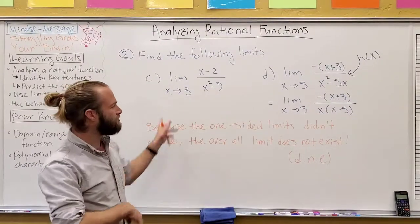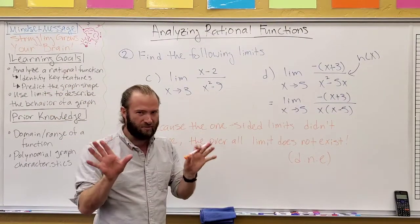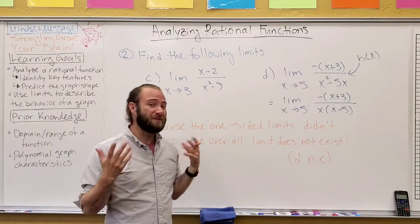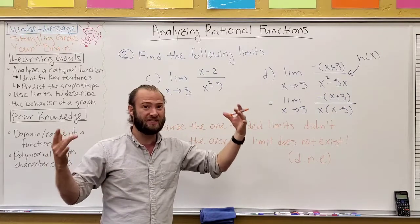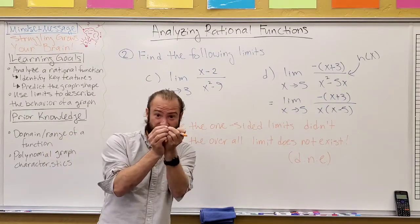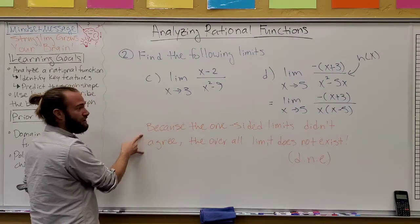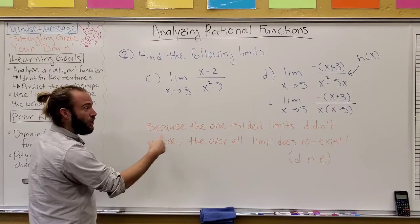So, I kind of misled you with the two answers before. Don't get me wrong. We did everything correct. It is important to think about the one-sided limits. But, because those one-sided limits went to infinity, and they didn't actually agree together, they weren't the same thing as each other, then actually it turns out, for these two situations, the overall limit,